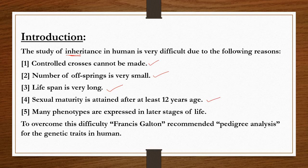Life span is very long, and sexual maturity is attained only after at least 12 years of age. If you choose a human for inheritance study you need to wait until 12 years, and as per the Indian constitution the marriage age for girls is 18 and for boys is 21 years — meaning you need to wait a minimum of 21 years to get an offspring.